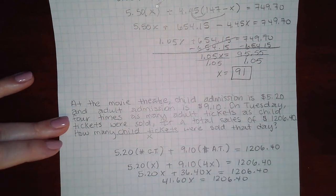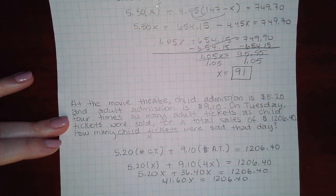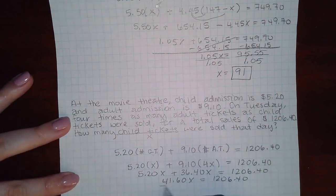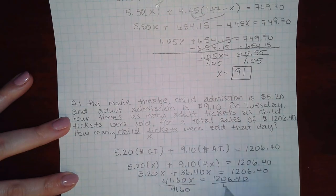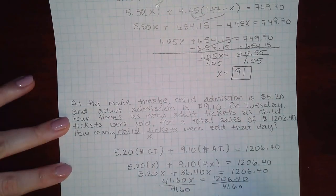And then if I divide by 41.60 on both sides, I get X equals 29.